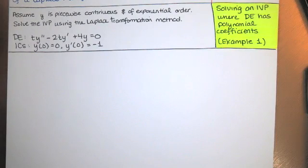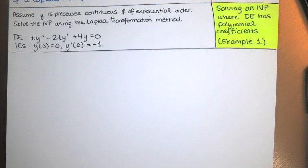In this video, we work our first example problem in which we solve an initial value problem where the differential equation has polynomial coefficients. We're going to assume that y is a piecewise continuous function and of exponential order, and we're going to solve the initial value problem using the Laplace transformation method.